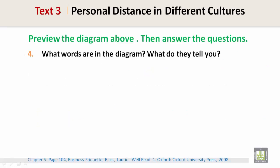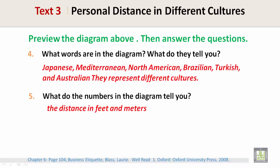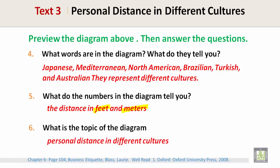What words are in the diagram? What do they tell you? Well, Japanese, Mediterranean, North American, Brazilian, Turkish, and Australian — they represent different cultures. What do the numbers in the diagram tell you? The distance in feet and meters. What is the topic of the diagram? Personal distance in different cultures.